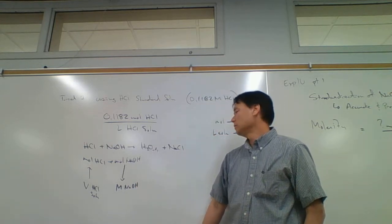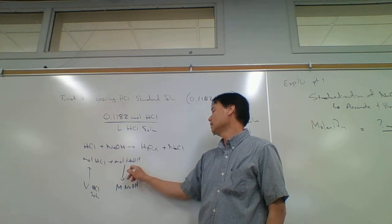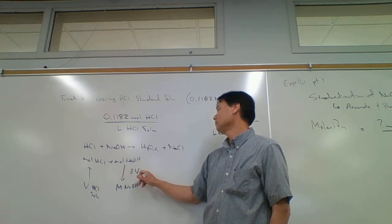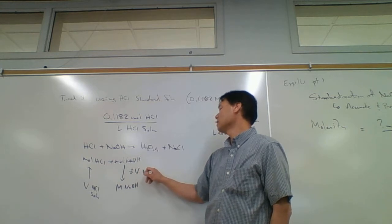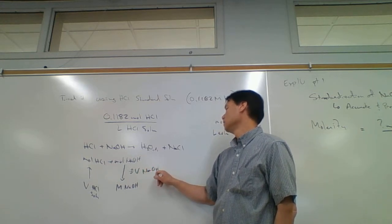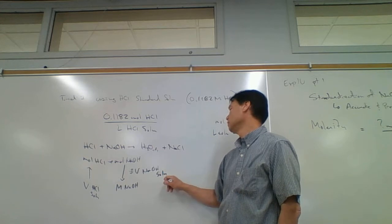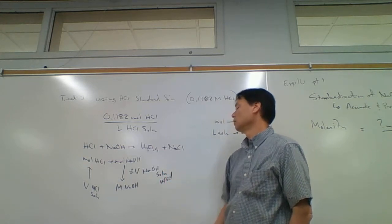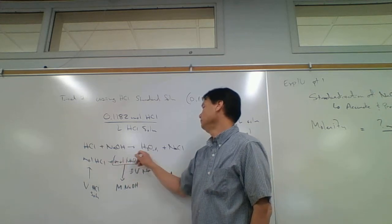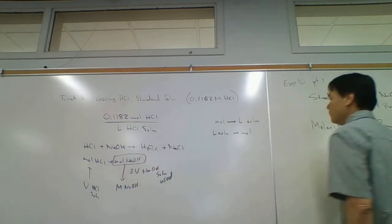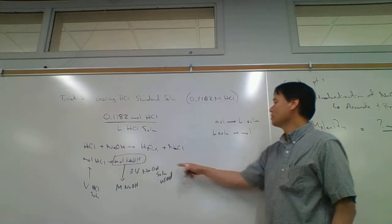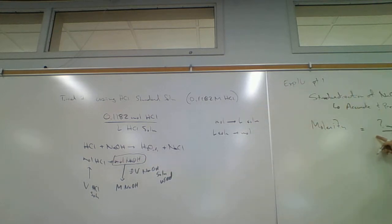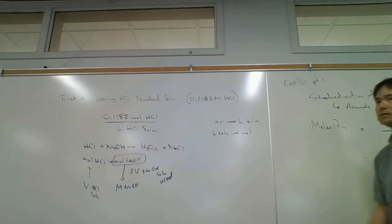From moles of sodium hydroxide, we can go to molarity of sodium hydroxide. The way we get to molarity of sodium hydroxide is we take the moles and divide by the volume of sodium hydroxide solution used. We'll calculate moles of sodium hydroxide using stoichiometry and plug that in, then divide by however many liters we used.